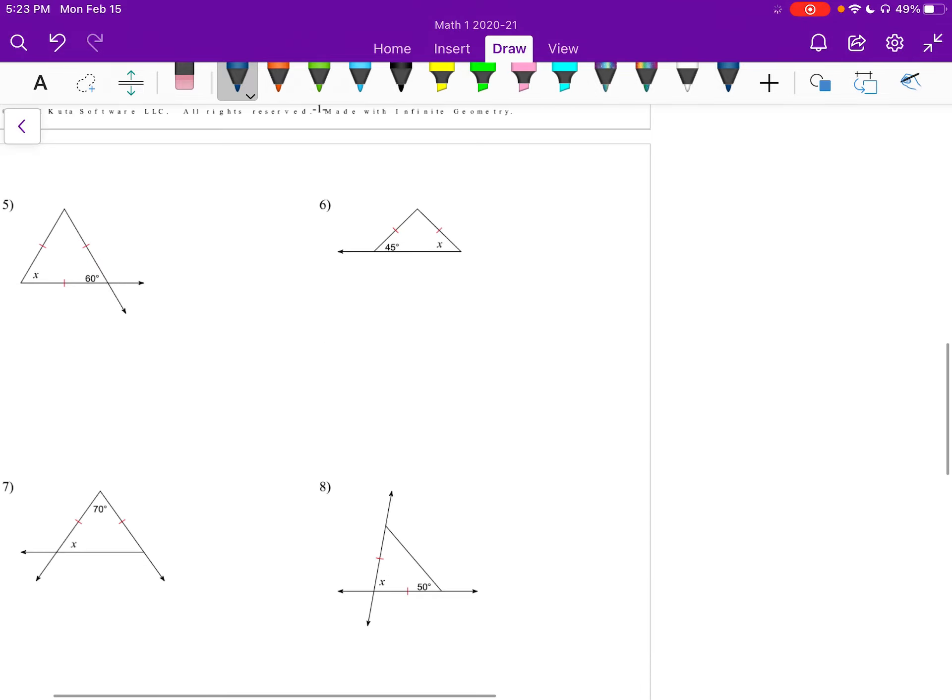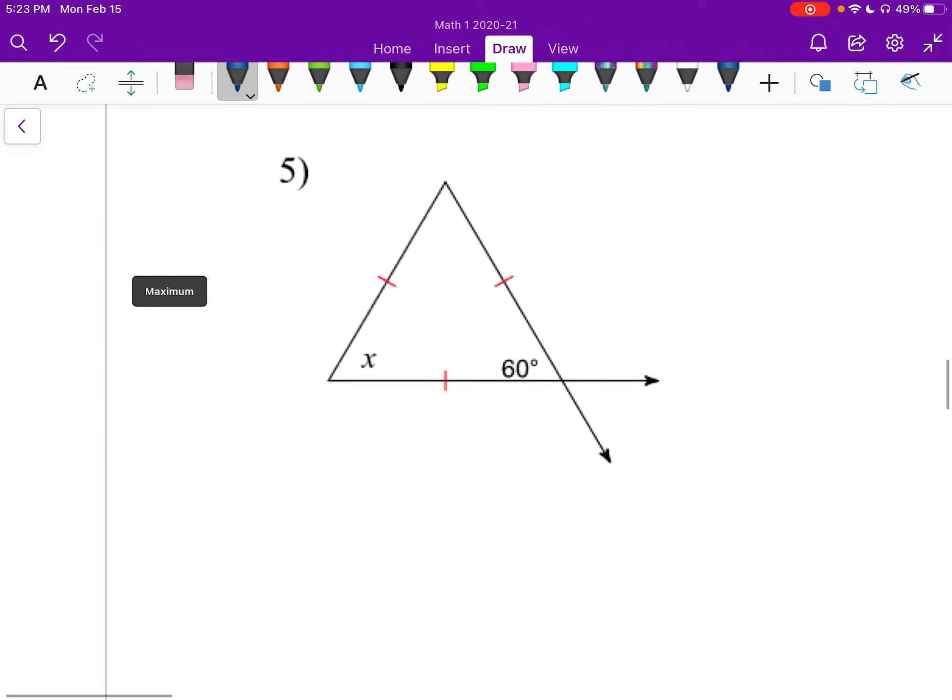Number five. This one we have three congruent sides. That means it's an equilateral triangle and not an isosceles triangle. Equilateral triangles have three equal sides and three equal angles. So this 60-degree angle is congruent to the other two angles. So I know that x is going to be 60.